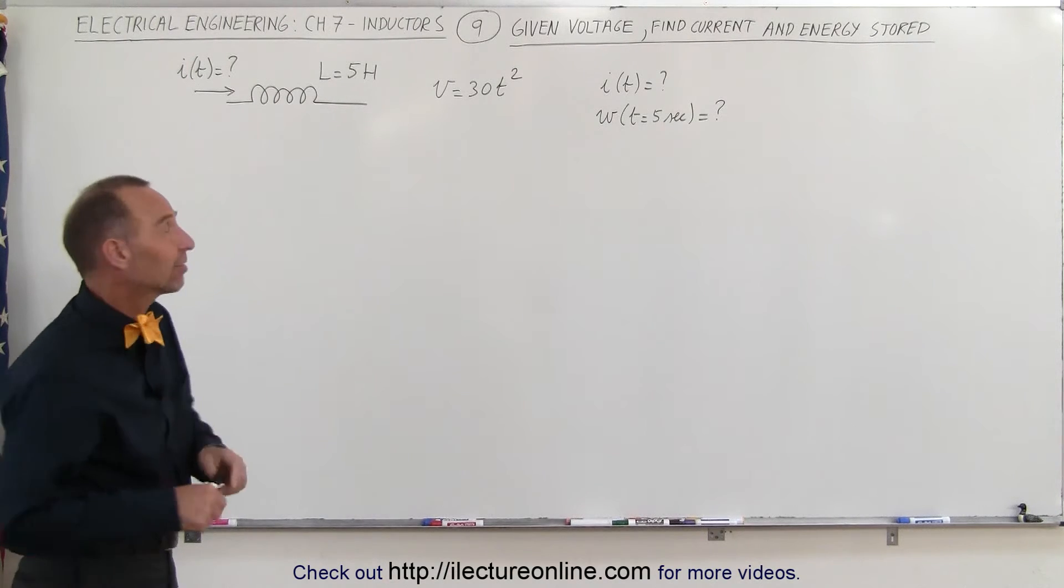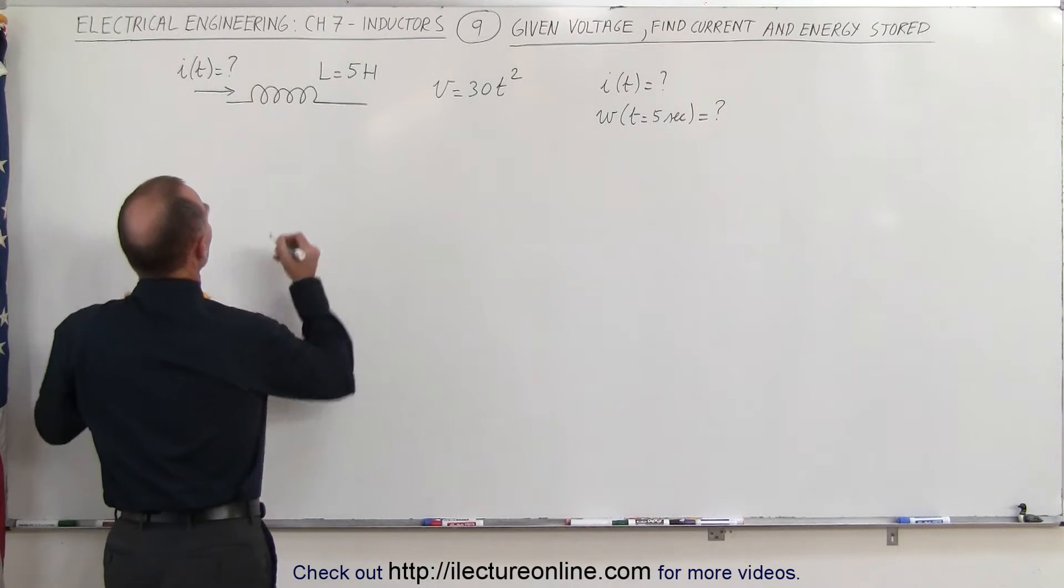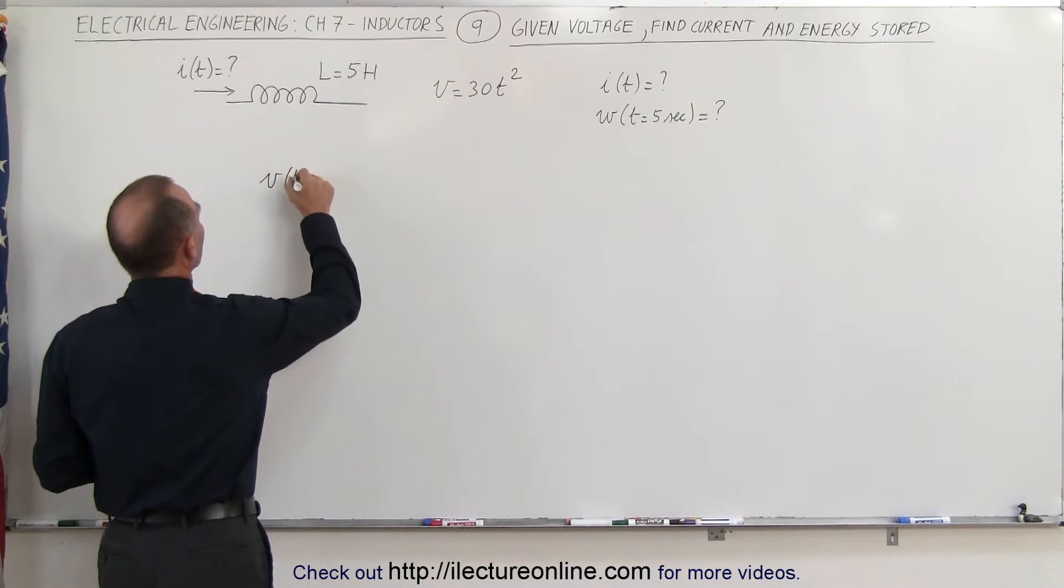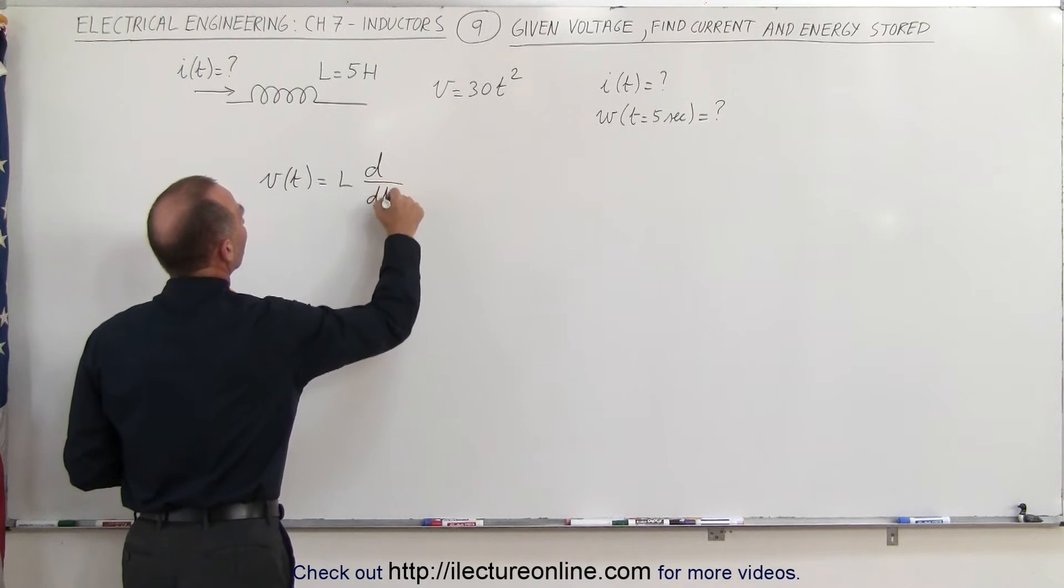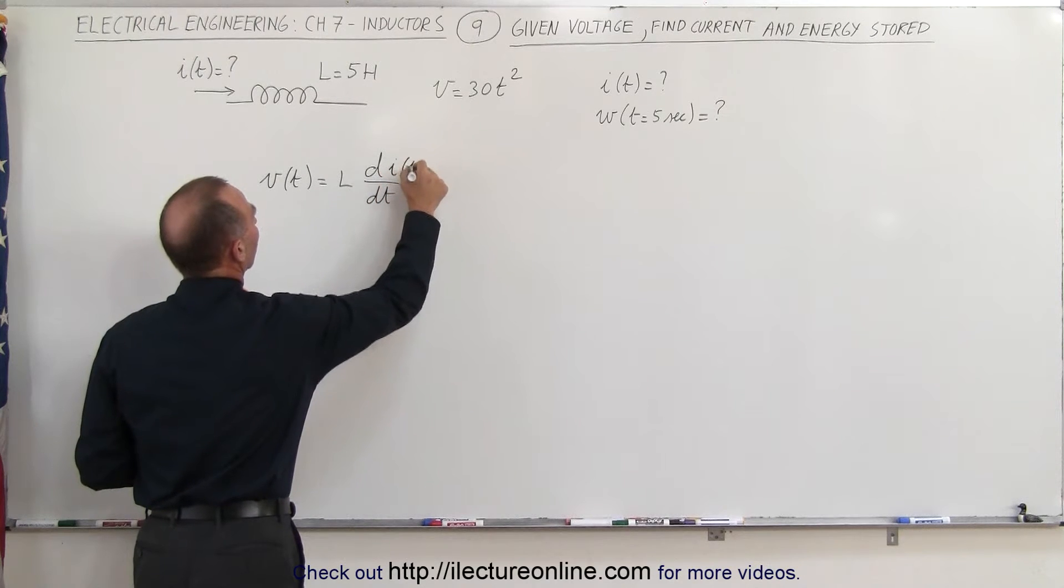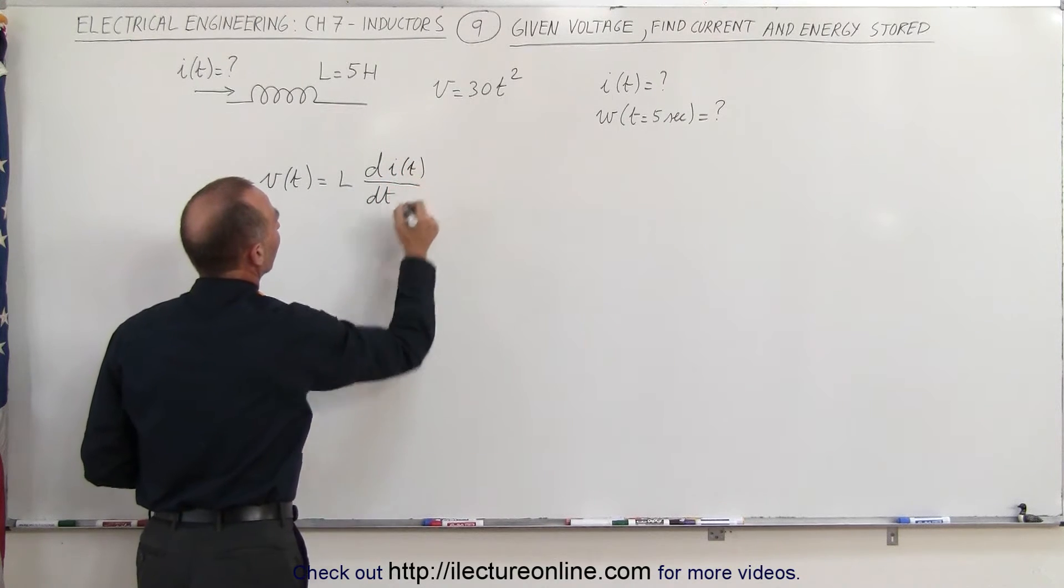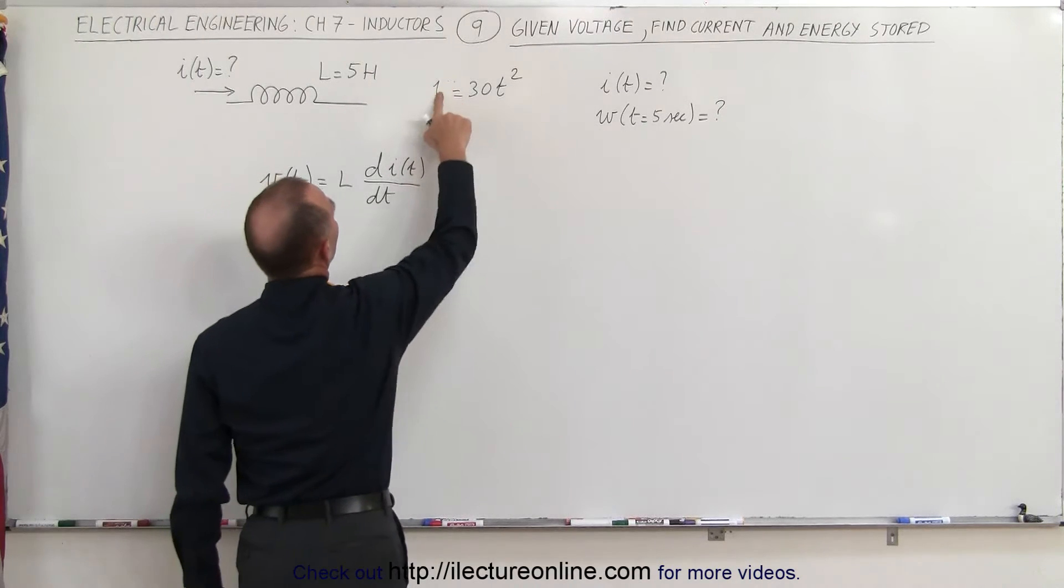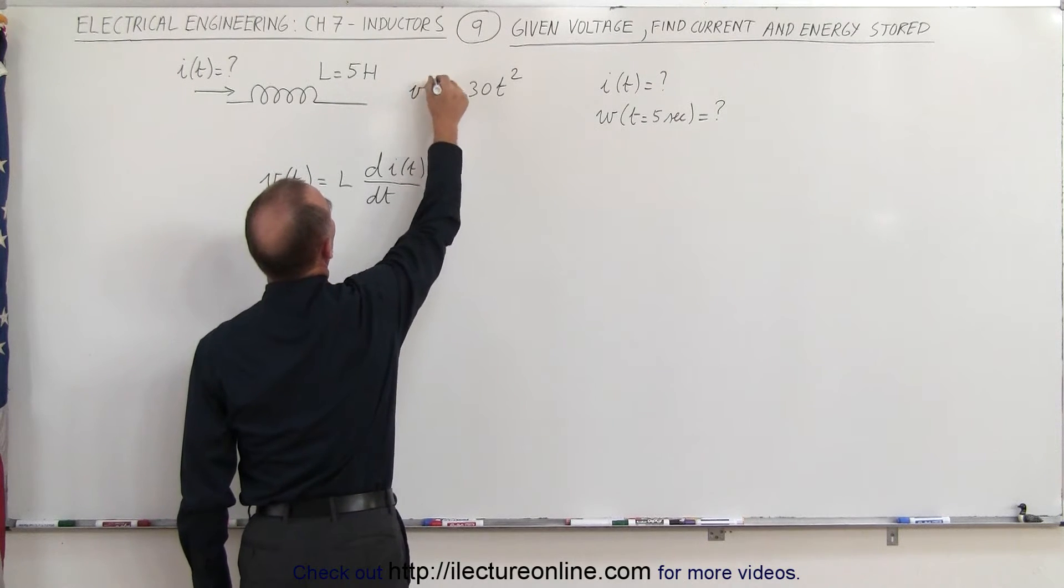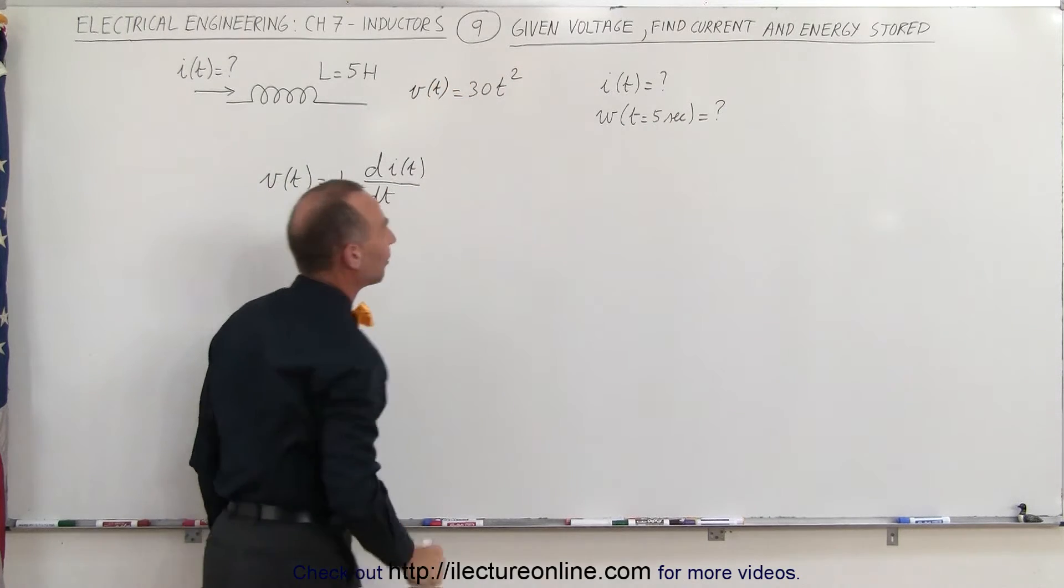We start with the basic equation that the voltage as a function of time is equal to the inductance times the rate of change with respect to time of the current. And of course the current is going to be a function of time as well. If you want to be more technical, we could write this as V as a function of time.